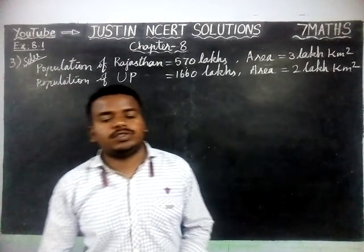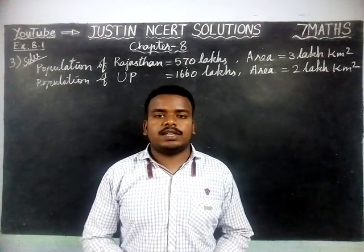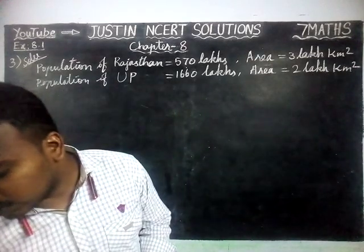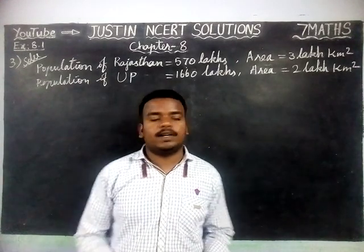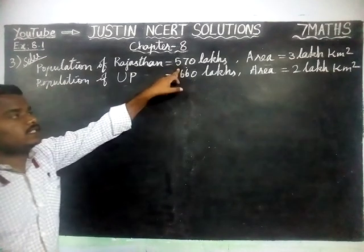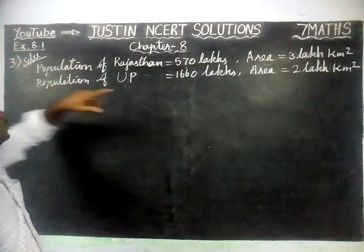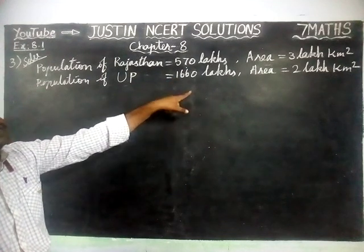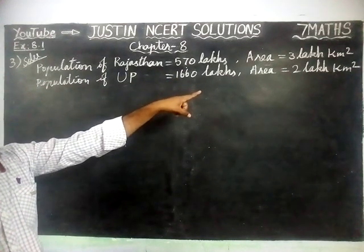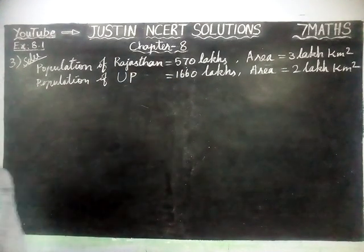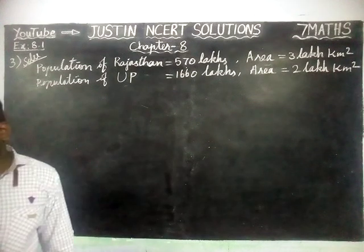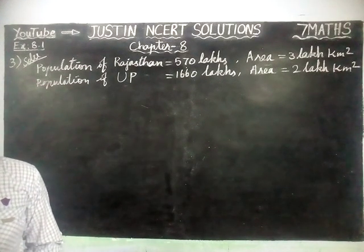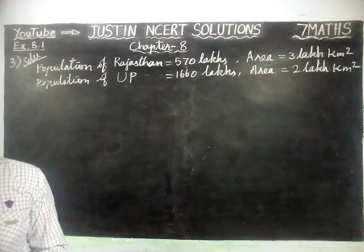Hi students, welcome to Justine Anxiety Solutions. In this video we are going to see Class 7 Maths Chapter 8 Exercise 8.1 Third Question. The question is: population of Rajasthan equals 570 lakhs and its area 3 lakh km², and population of Uttar Pradesh equals 1660 lakhs and its area equals 2 lakh km². They asked us to find how many people are there per km² in both these states, and second, in which state is less populated.